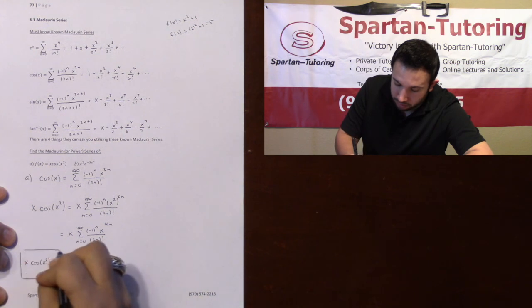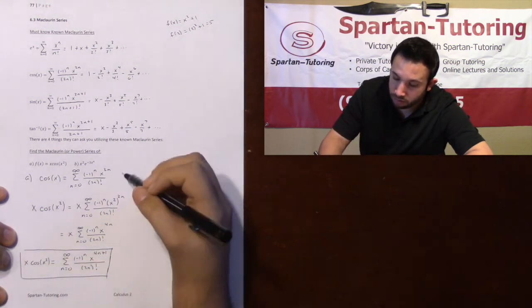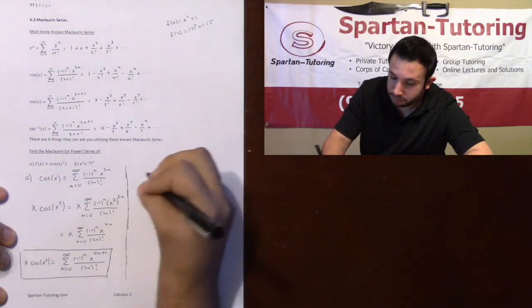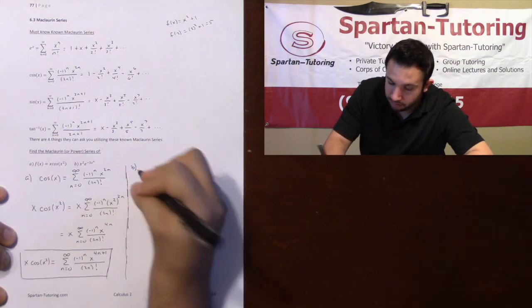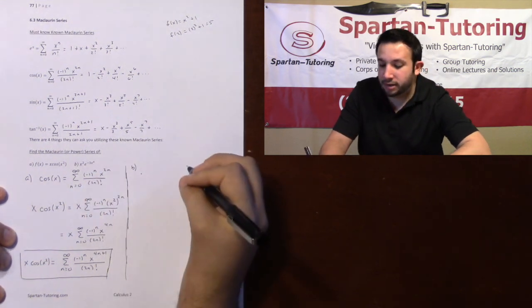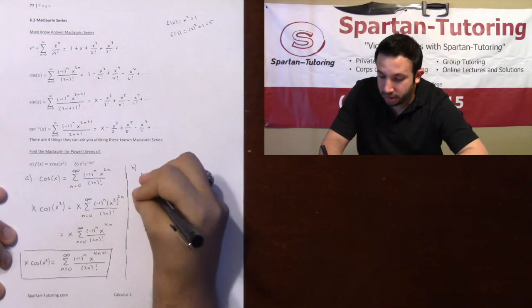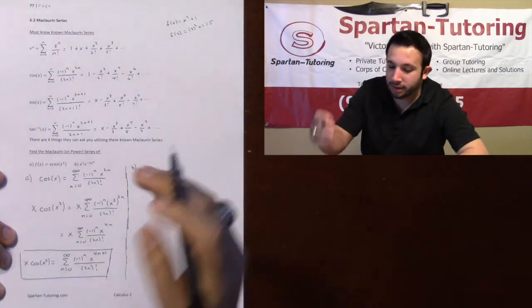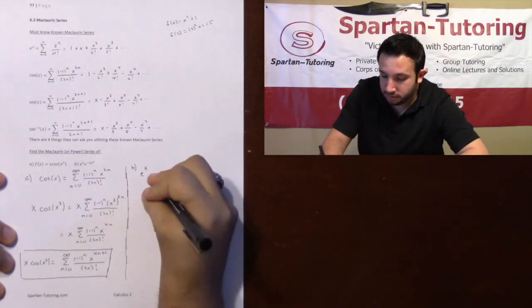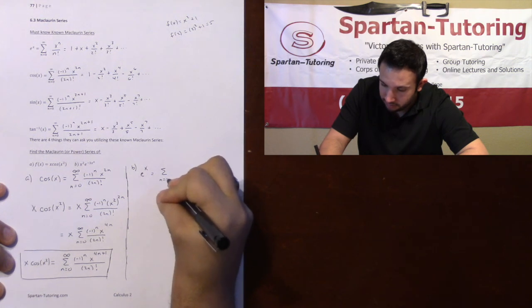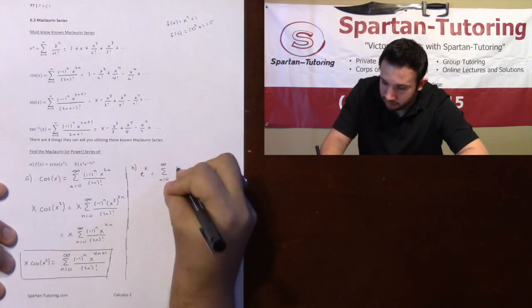Let's do one more. Let's do one more to really ensure that we understand what's going on. Let's take a look at part B. So for part B, what we have is we have X squared e to the negative 3X to the 4th. So the first thing I'm going to do is just write my parent function for e to the X. That way I have something concrete to plug into.